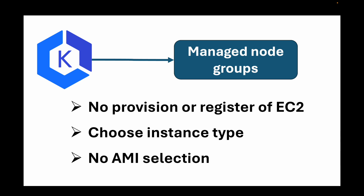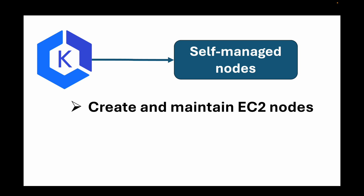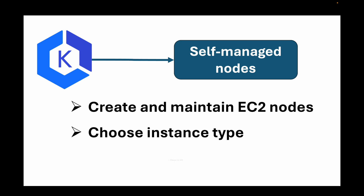If you need more control over instances in your data plane, you can choose self-managed nodes. With managed node groups, EKS controls the instances, but with self-managed nodes you are responsible for creating and maintaining them — choosing the instance type and the AMI to launch. Under self-managed nodes you are trading simplicity for more control, particularly over the operating system, compared to managed node groups.